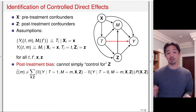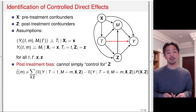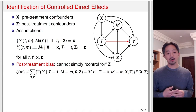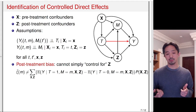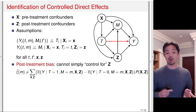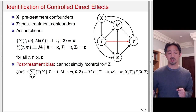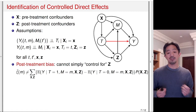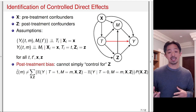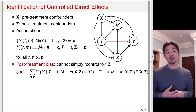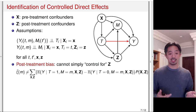So we cannot simply condition on Z. You might naively compute the difference of the conditional expectation function of the outcome when T equals 0 versus T equals 1, holding everything else constant — in particular, M held at a fixed value — and then average over the distribution of X and Z. But that difference is not the same as the controlled directed effect. So this approach has post-treatment bias.